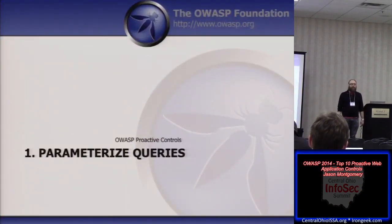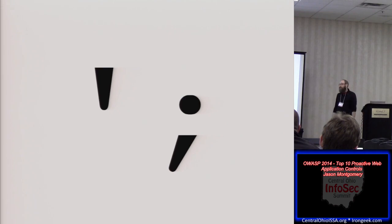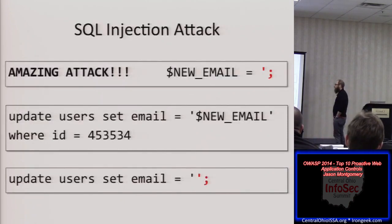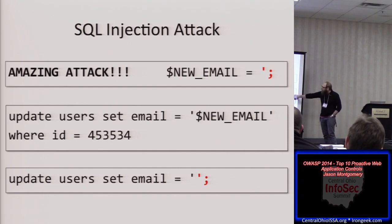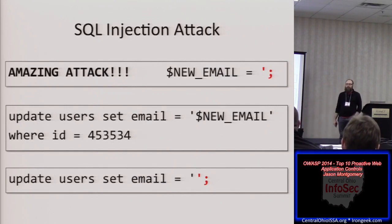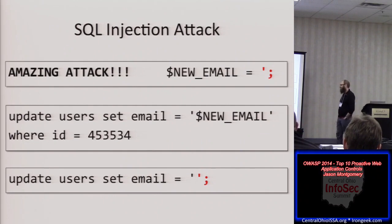First up: parameterized queries. This is hopefully not something we need to continue to talk about too much, but it's still the most dangerous thing on the internet half the time, which is really unfortunate. The classic attack uses two very dangerous characters — tick and semicolon. In simple pseudocode, we have an update statement SQL query, and if the attacker sends tick semicolon, that ends up in the variable, we truncate, and we've just wiped out everything for all the users.